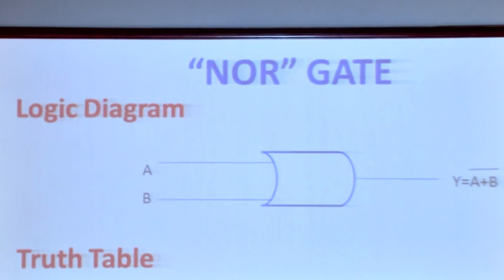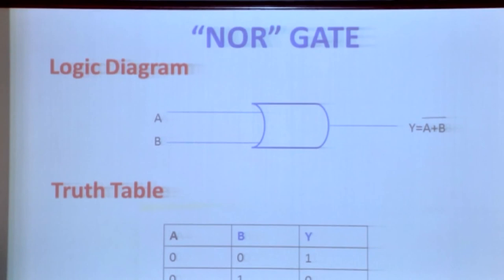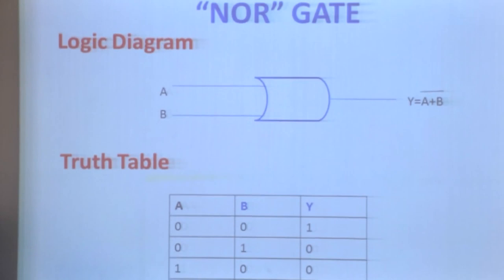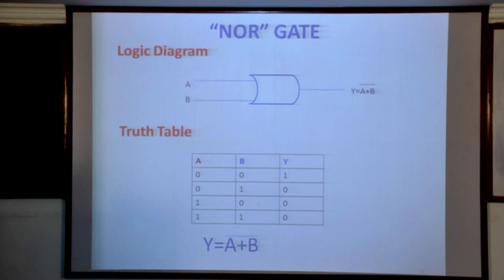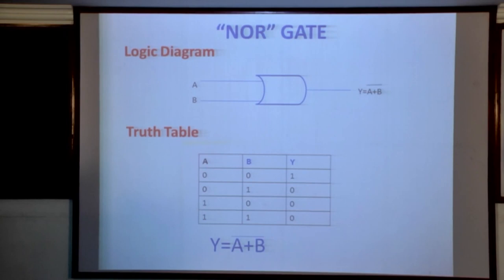The next gate is the NOR gate. NOR gate is a combination of NOT and OR. It is represented by Y equal to (A + B) bar. See the truth table: when A=0 and B=0, the OR result is 0 and the complement is 1. When A=0 and B=1, the OR result is 1 and the complement is 0. When A=1 and B=0, the OR result is 1 and the complement is 0. When both inputs are high — A=1 and B=1 — the output is low.